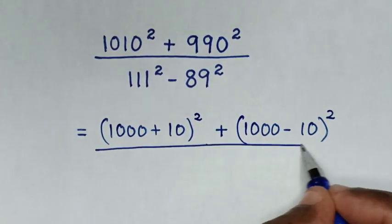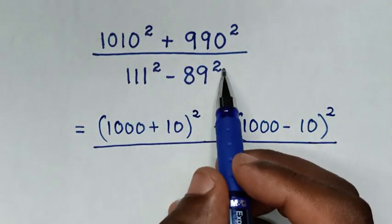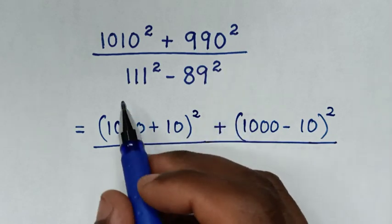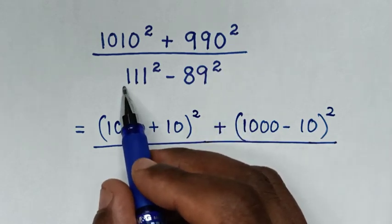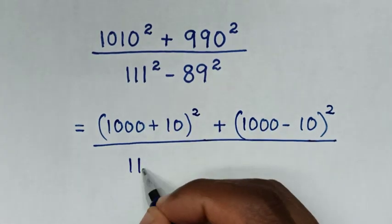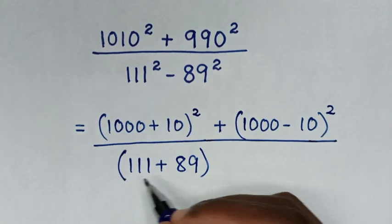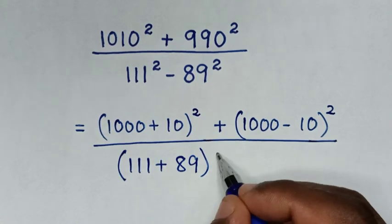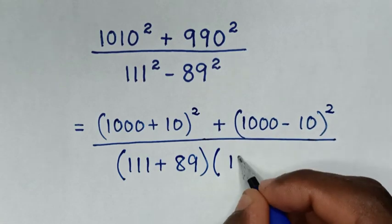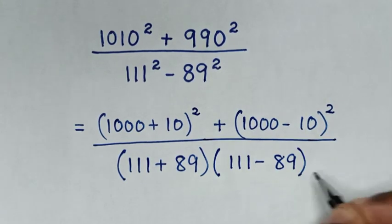then over. From here in the denominator, this is in the form of a perfect square, so it is the same as 111 plus 89, bracket, times bracket 111 minus 89, bracket.